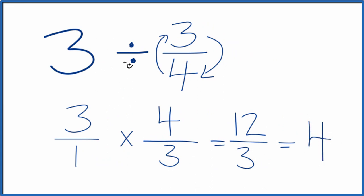So when we divide 3 by 3 fourths, we get 4. And we can check our work. If we multiply 4 times 3 fourths, we should get 3. Let's try that.